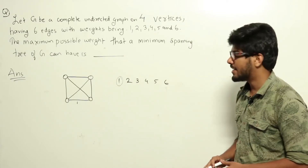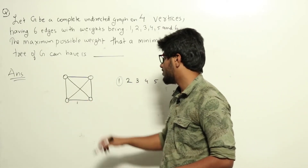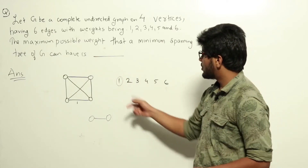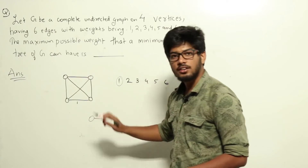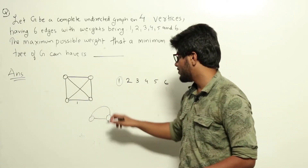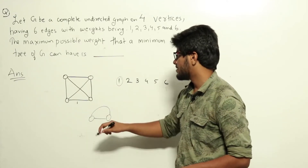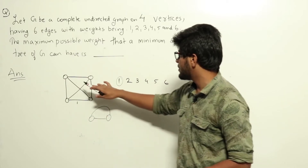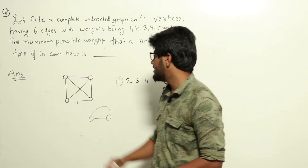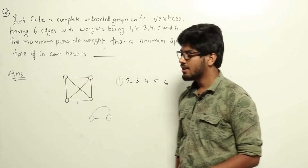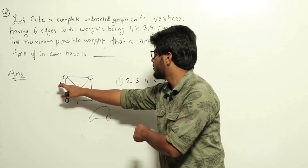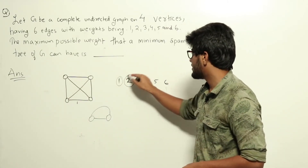The current minimum spanning tree connects two nodes, so any new edge will add a new node. In a simple graph there are no repeated edges between two nodes, so whatever node we choose, any edge will add a new node to the MST. Whether we choose this edge, that edge, or the other, it adds a new node. Therefore, edge 2 will always be selected by Kruskal's algorithm.